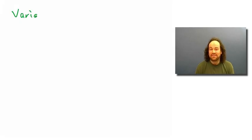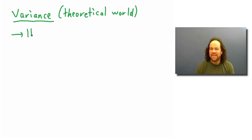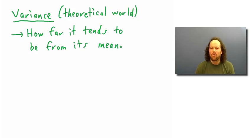Now we understand the mean or expected value of a random variable. There's another quantity we need to understand: the variance. You may recall from last week's lectures we talked about variance from sample data, but we also have variance in the theoretical world. The variance tries to measure the spread of the values, or how far away they tend to be from their mean value.